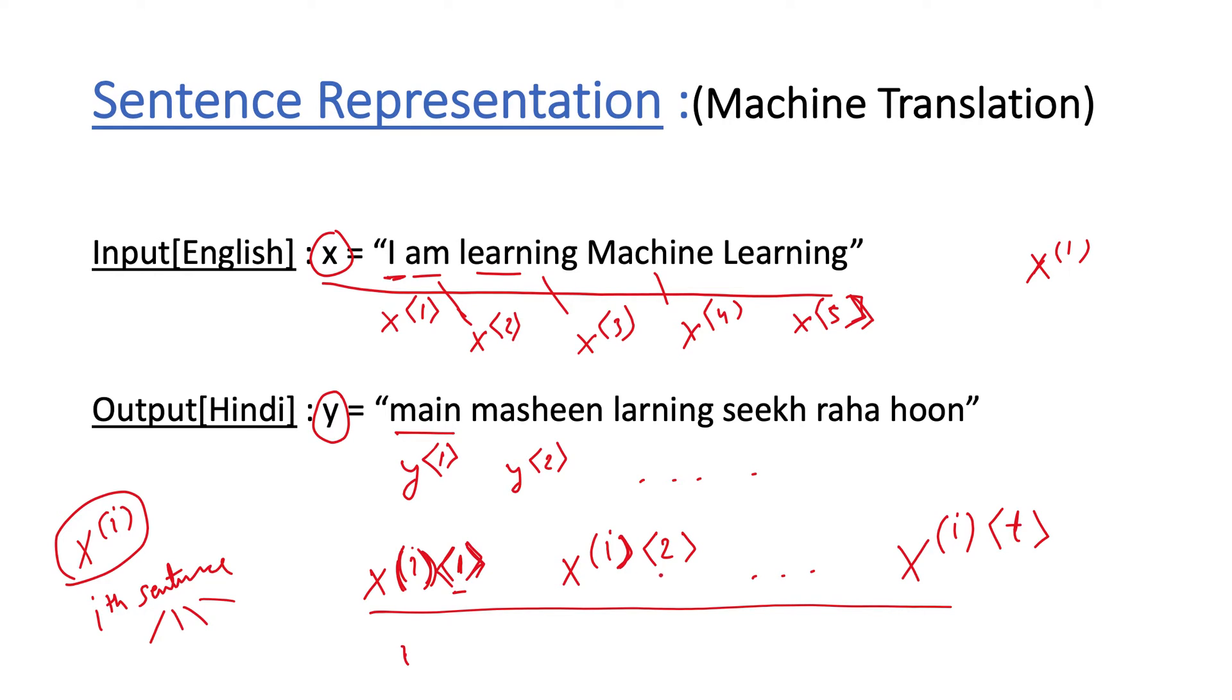This is the first word, then second word, tth word. Similarly for the ith output we will denote the tth word by y^(i)<t>. So this will be our representation of words and sentences.